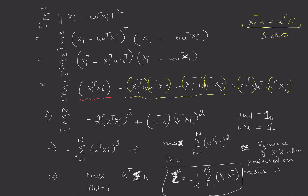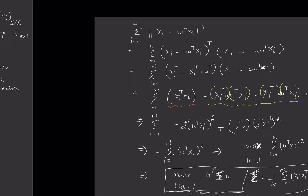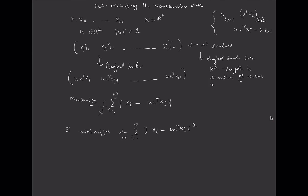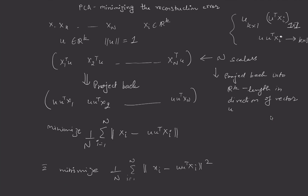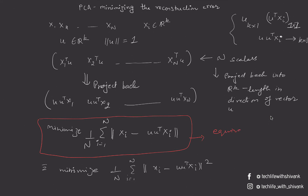In summary, we have shown that the objective function of minimizing the reconstruction error is equivalent to maximizing the variance of the projected points. Thank you, and see you in the next video.